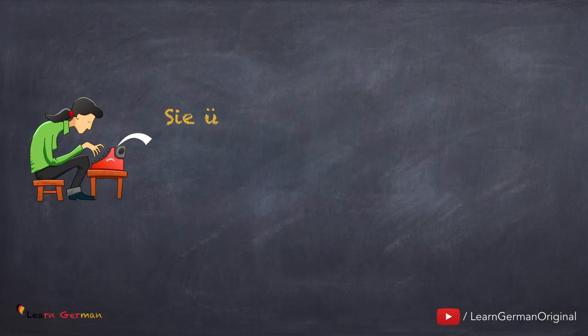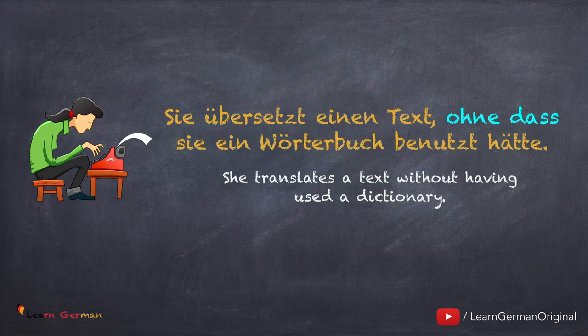Manchmal benutzt man auch die K2-Form, wenn man Sätze mit ohne dass formuliert. Zum Beispiel: Sie übersetzt einen Text, ohne dass sie ein Wörterbuch benutzt hätte. Wir lernen K2 im Detail in einer späteren Lektion.